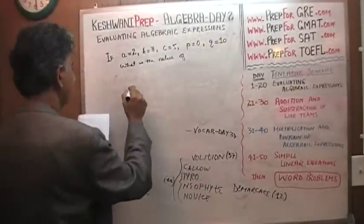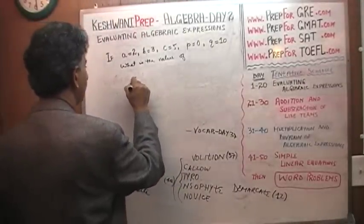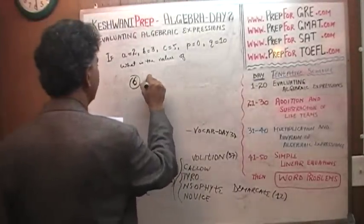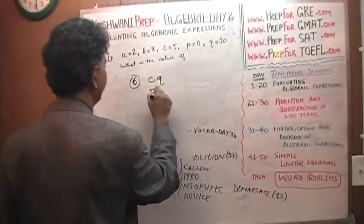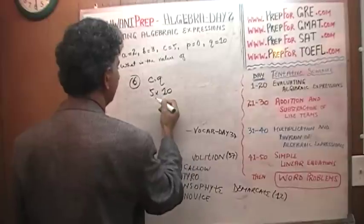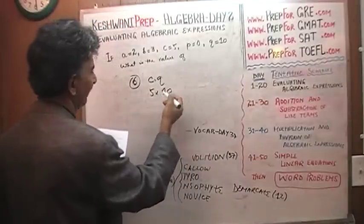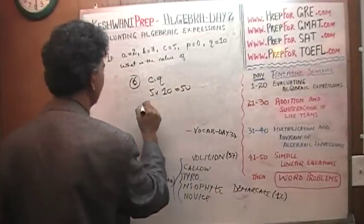Number 6: c times q. C is 5, q is 10. Sometimes I put multiplication signs, sometimes I put parenthesis, it depends on the mood. So that's 50.